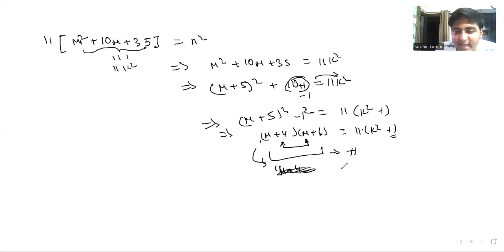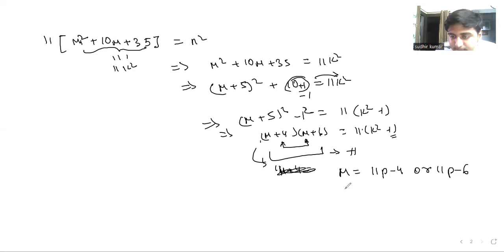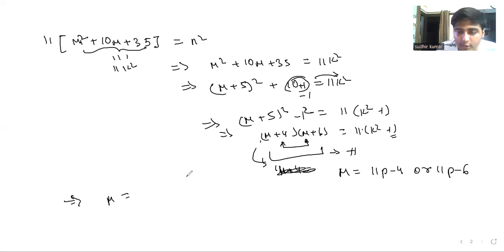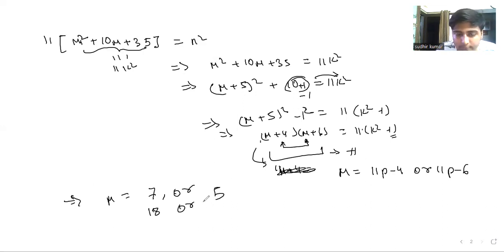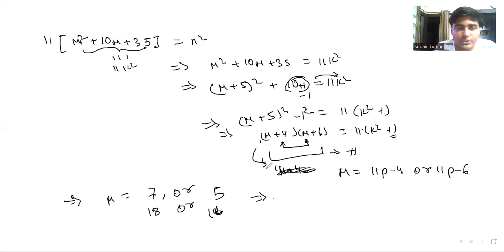So m = 11p − 4 or m = 11p − 6. For p=1 we get m=7 or m=5. For p=2 we get m=18 or m=16.